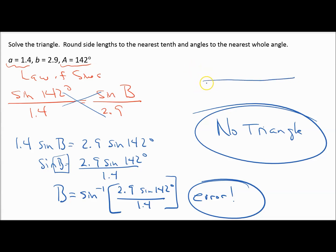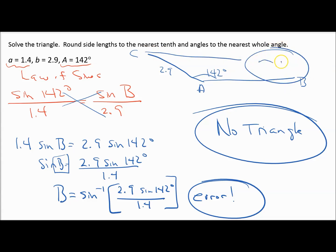If you try to draw it, you have a 142-degree angle A, with side b = 2.9 on one arm. The side across from angle A is just not long enough — it doesn't reach the other side. That's why no triangle exists for these conditions.